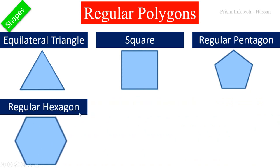Next one is a regular hexagon. Hexagon means six — this shape consists of six edges or sides, so it is called a hexagon. All six edges are equal, so this shape is called a regular hexagon.